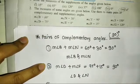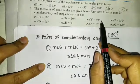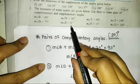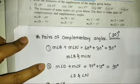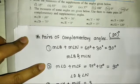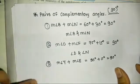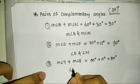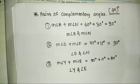Third pair: the measurement of angle Y is 90 degrees, and the complementary angle would be 0 degrees. Measurement of angle Y plus measurement of angle E equals 90 plus 0 equals 90 degrees. So, angle Y and angle E are the third complementary pair.